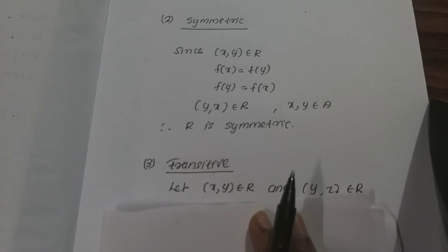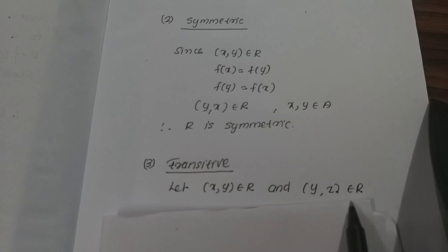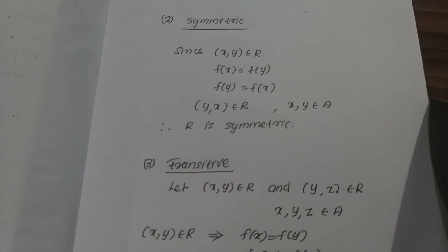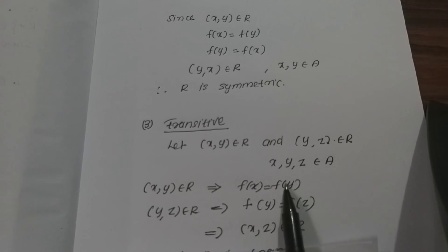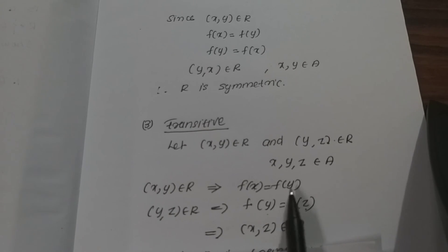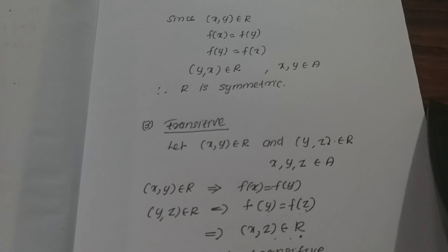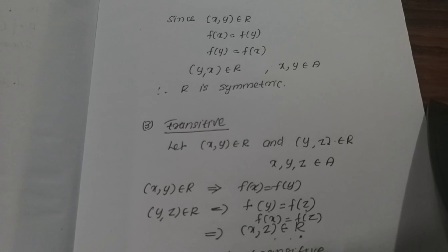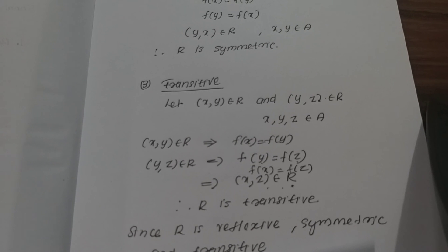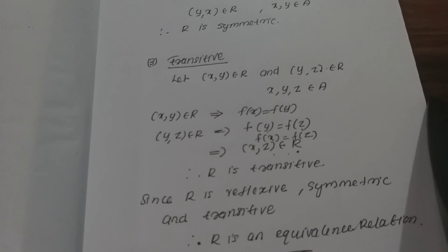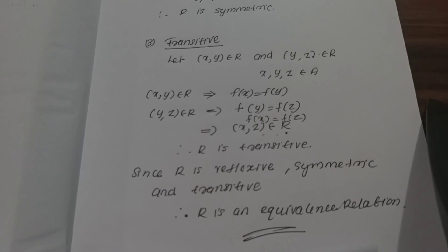For transitive: if (x, y) belongs to R and (y, z) belongs to R, then f(x) equals f(y) and f(y) equals f(z). Therefore f(x) equals f(z), which implies (x, z) belongs to R. So R is transitive. Since R is reflexive, symmetric, and transitive, R is an equivalence relation.